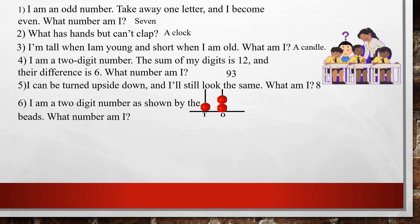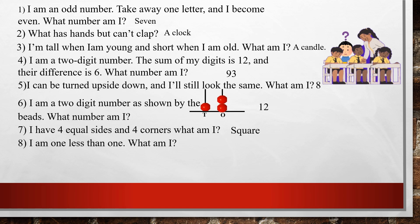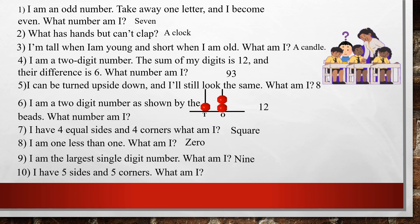I have four equal sides and four corners — what am I? A square. I am one less than one — what am I? Zero. I am the largest single-digit number — what am I? Nine. And the last one: I have five sides and five corners — what am I? A pentagon.